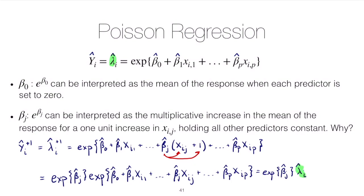This is the key result: e raised to beta_j_hat is the multiplicative increase or decrease in the mean of the response when we increase the j-th predictor by one unit. In other words, increasing x_j by one multiplies the original mean of the response by e to the beta_j_hat. In the next lesson we'll look at real data in R and see how to interpret the parameters of the Poisson regression model in practice.